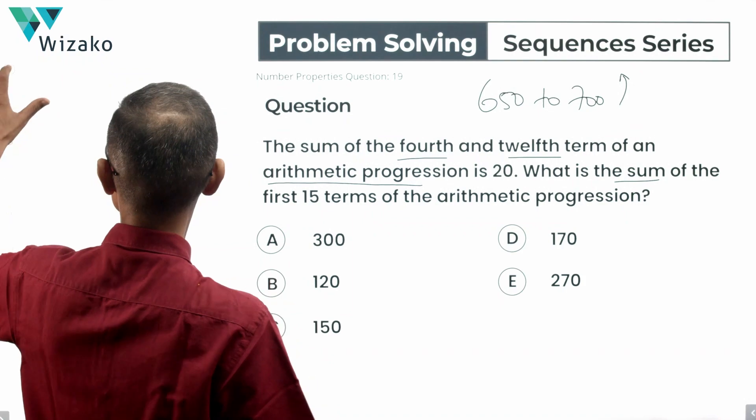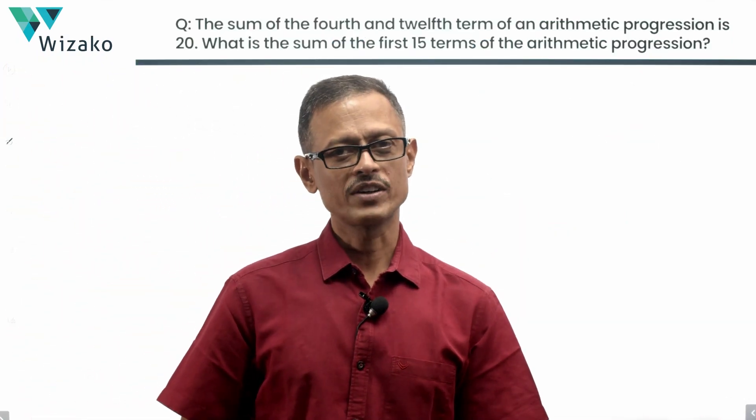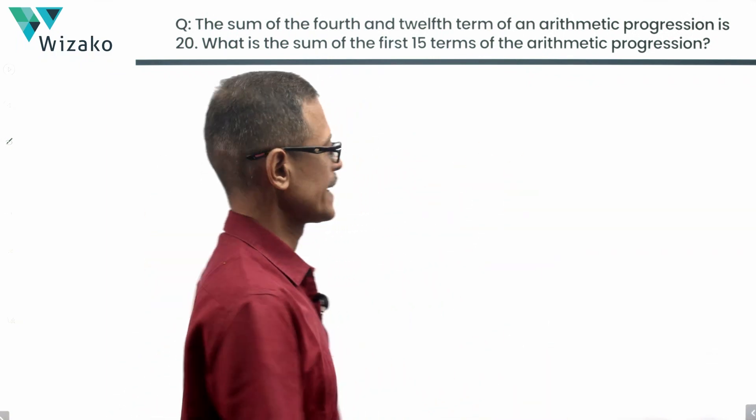First step, what we'll do is let's write down the formula to compute the sum of the first 15 terms of an arithmetic progression. The three formulas that we have learnt, we'll use the last of the formula, the final step we'll take it.